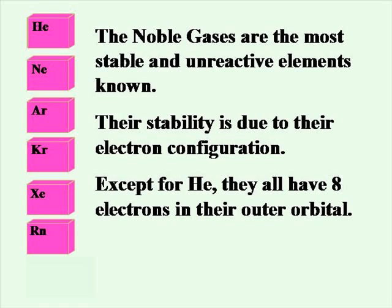The noble gases are the most stable and unreactive elements known. Their stability is due to their electron configuration. They have full S and P orbitals for eight electrons in their outer orbital.